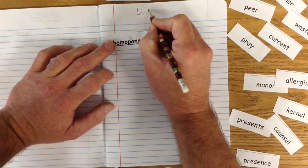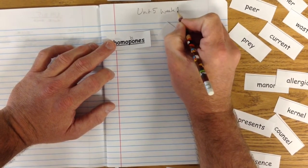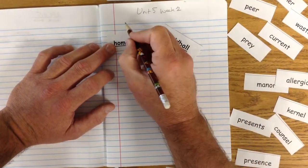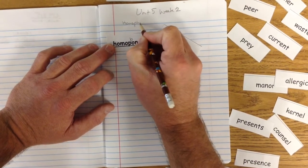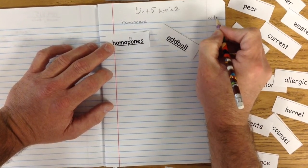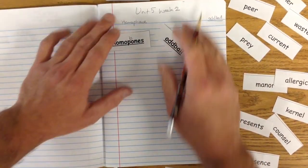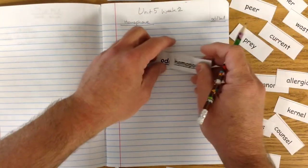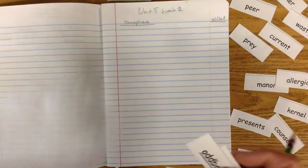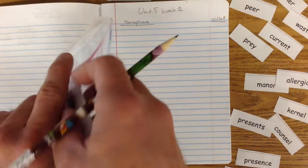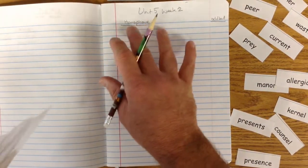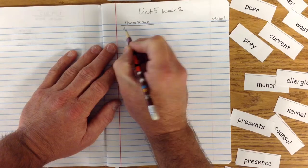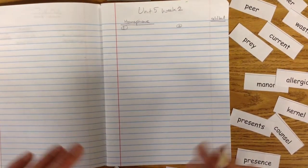Let's see what we got here. Unit 5, Week 1. Oh, oh, oh. It's a good thing you guys are catching me on this. Week 2. And we're going to do homophone and we're going to do oddball over here. And the reason I want to do it over there is because I want to leave plenty of room, plenty of room for you to do a little work on this.